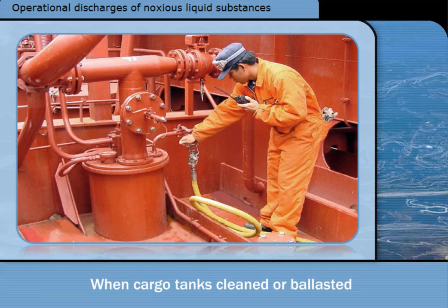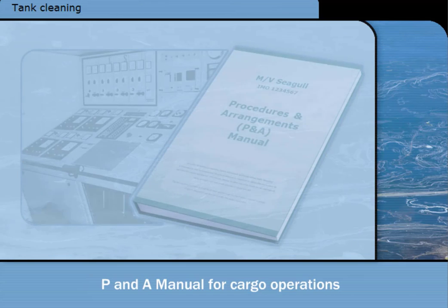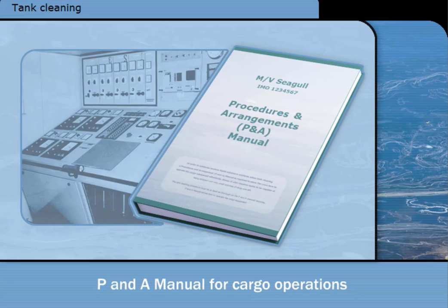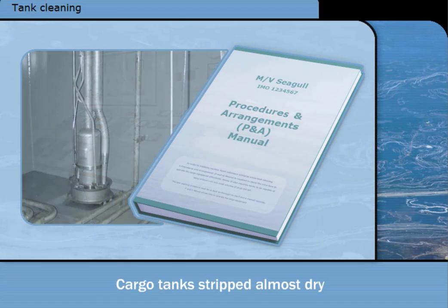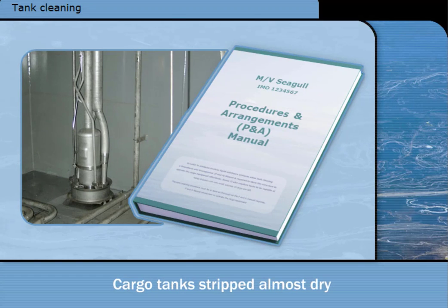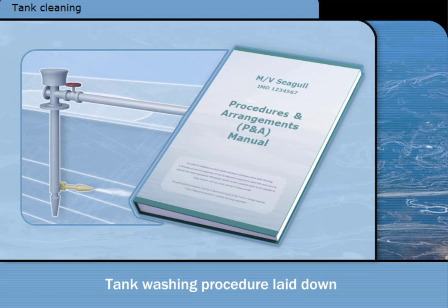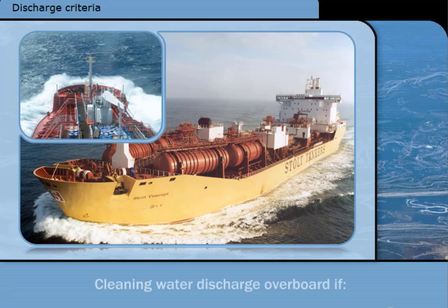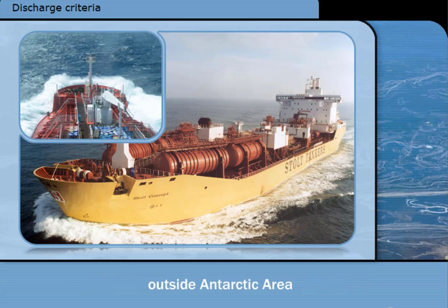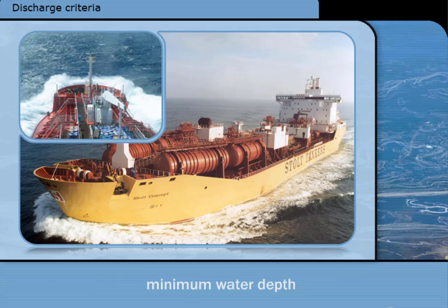Operational discharges occur from ships carrying noxious liquid substances when the cargo tanks are cleaned or ballasted. In order to minimise noxious liquid substance mixtures when tank cleaning, a procedures and arrangement manual is required to show the crew how to operate the cargo equipment effectively. Annex 2 also requires tanks to be capable of being stripped until only small volumes of cargo are left. The tank washing procedure must be at least as thorough as the P and A manual requires. Assuming the tank has been washed using water and not a cleaning chemical, then any further washing water may be discharged overboard if the ship is outside the Antarctic area. The ship must be on passage above a minimum speed while meeting other requirements regarding water depth and distance from land. Sometimes cargo residues will be left in the slop tanks.